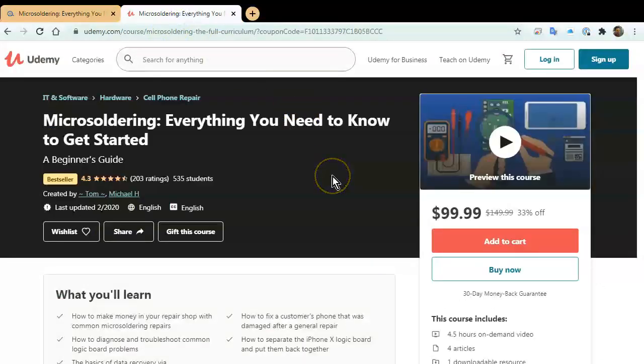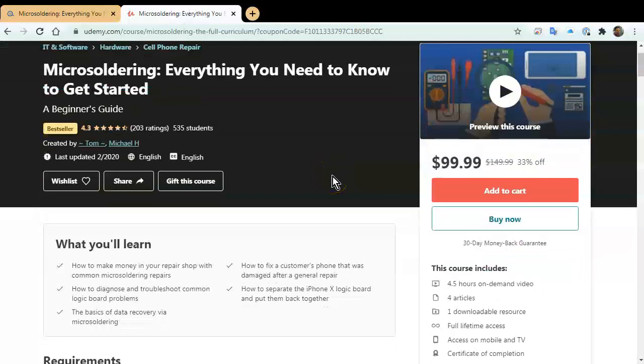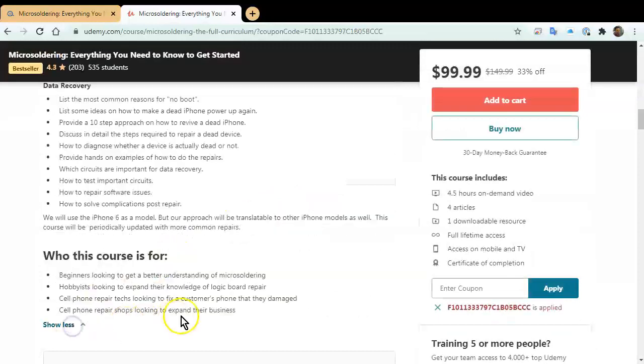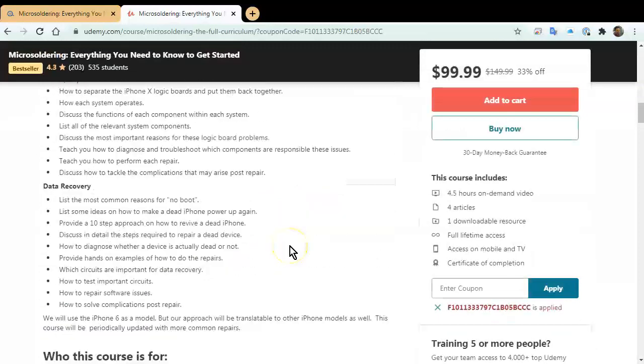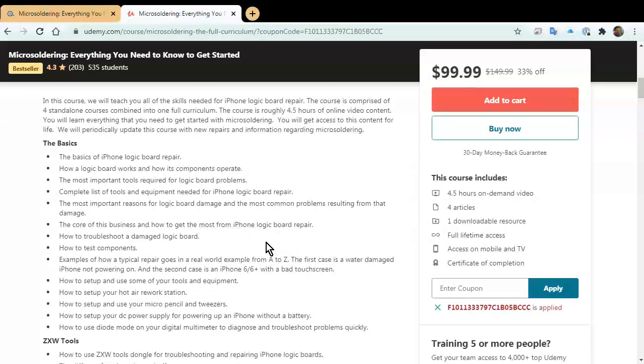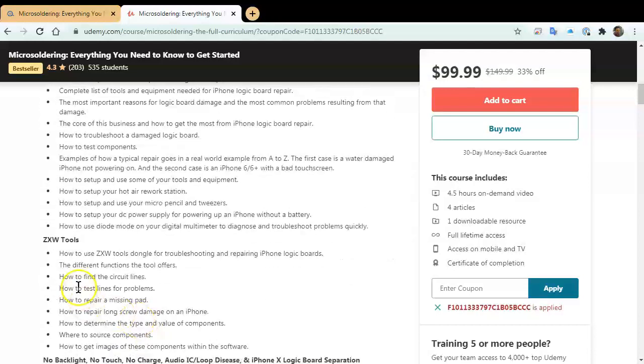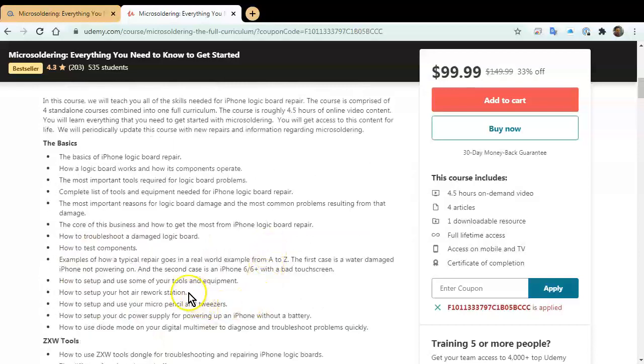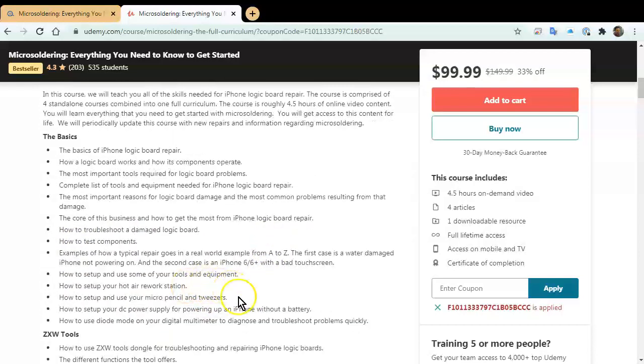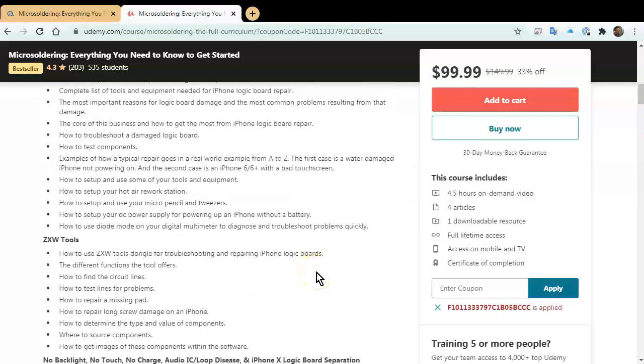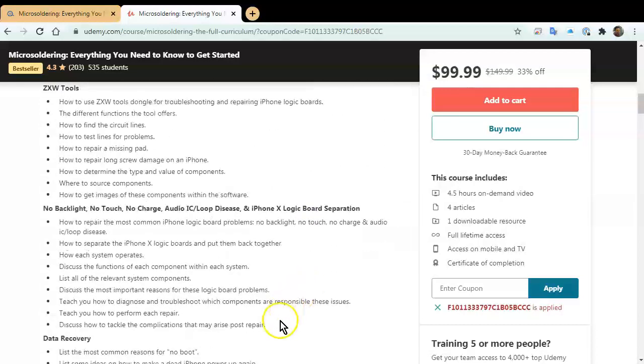So, our online course, it was created by Tom and myself. It contains four and a half to five hours of online video instruction. It'll teach you everything that you need to know to get started with microsoldering. So, basically, we start with the basics. You know, just the component level. How to use ZXW tools. What kind of, how to set up your tools. What kind of tools you need. How to set up your hot air rework stations. Use your micropencil and tweezers and DC power supply and all that stuff. And then we go into actual repairs.